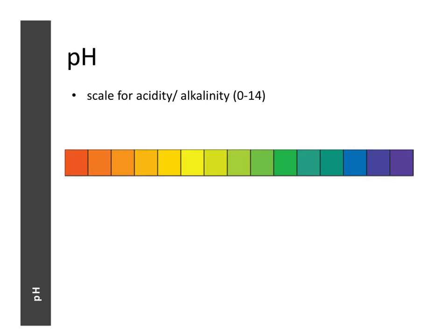In the next part we're going to learn about pH. pH is a scale for measuring how acidic or alkaline a substance or solution is. It contains a range of numbers from 0 to 14: 0 stands for strongly acidic, 14 stands for strongly alkaline, and right in the middle at 7 it stands for neutral.